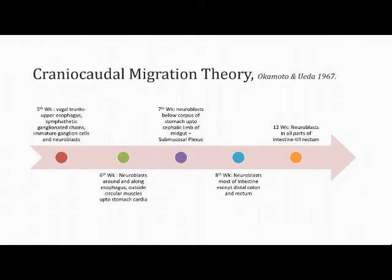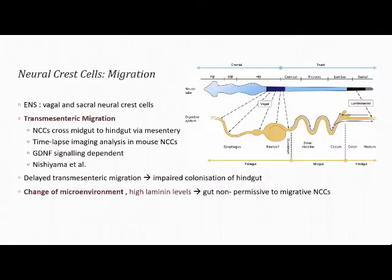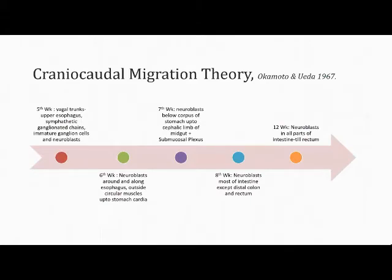By seven weeks, neuroblasts were noticed below the corpus of the stomach up to the cephalic limb of the midgut and present within the submucosal plexus. By the eighth week, neuroblasts were present in most of the intestine except the distal colon and rectum. By the twelfth week, neuroblasts were present in all parts of the intestine including the rectum and submucosal plexus. Based on these findings, they suggested Hirschsprung disease was a developmental anomaly where cessation of migration at earlier levels resulted in longer aganglionic segments.